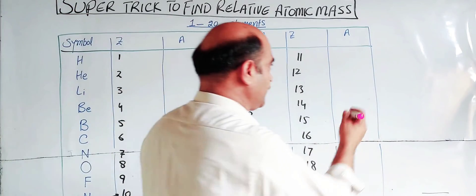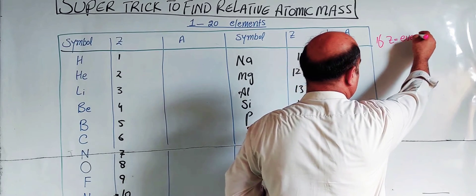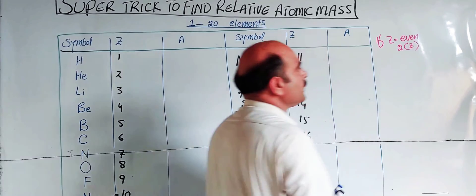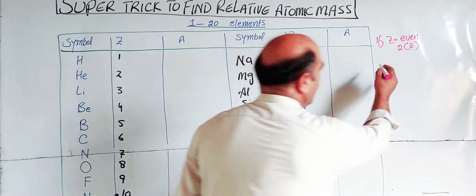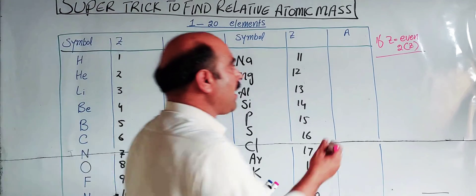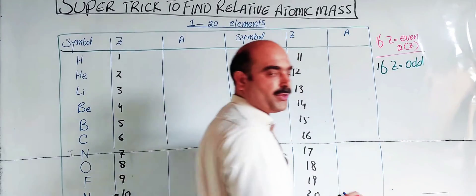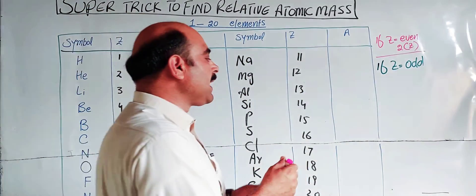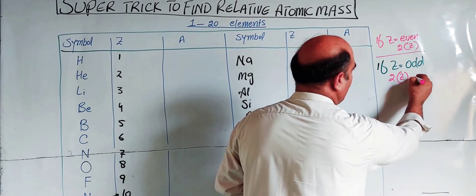Now here is the super trick. If Z, the atomic number, is even, then use the formula: mass number = 2 × Z. If Z is odd — for example Z = 1, 3, 5, 7, 9, 11 — then use the formula: mass number = 2×Z + 1.